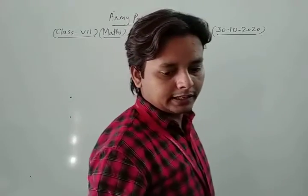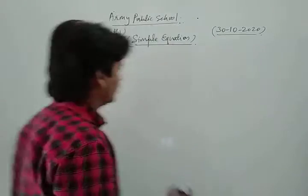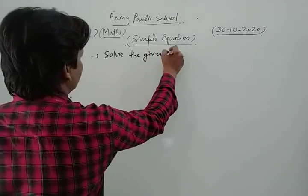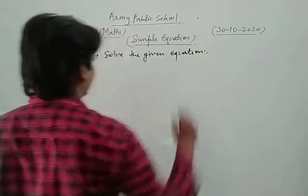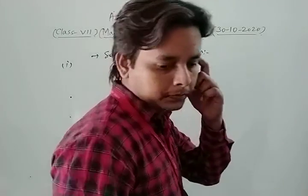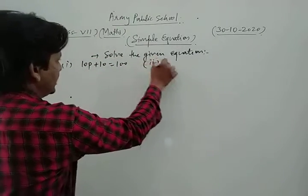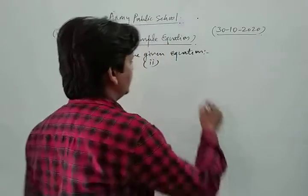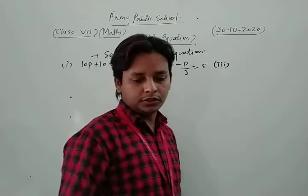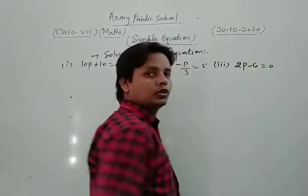This is chapter number 4 and we take some questions based on them. Solve the given equations. Your first equation is 10p plus 10 is equal to 100. Your second equation is minus p upon 3 is equal to 5. Your third equation is 2p minus 6 is equal to 0.